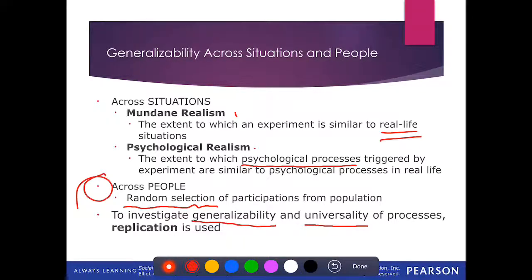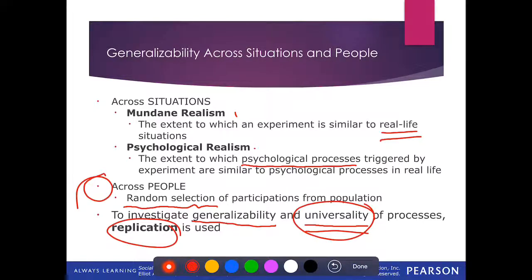To know if results are generalizable or universal, we have to replicate — redo the studies exactly the same to see if we get the same results, then redo them using different situations and different kinds of people. If people in every scenario react the same way across every experiment and every condition, even when you change the groups of people, then we can say that's actually universal. But that's something we have to test and replicate.